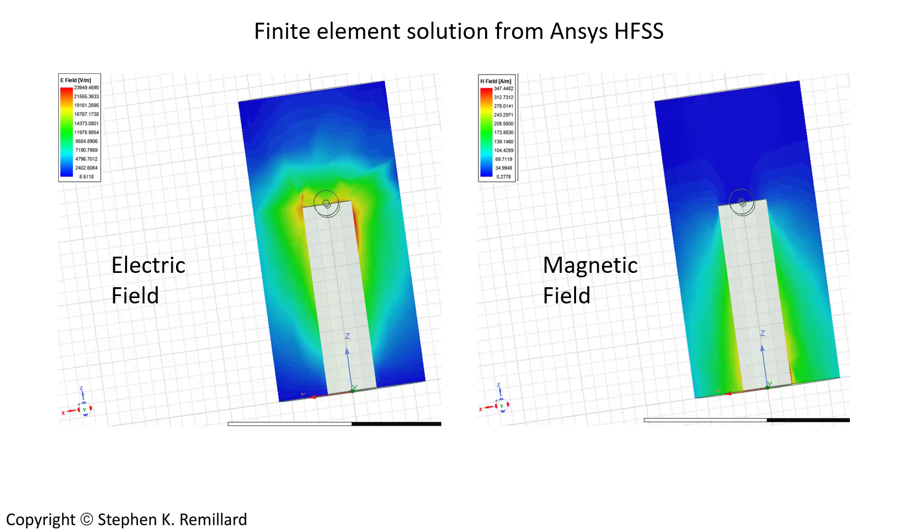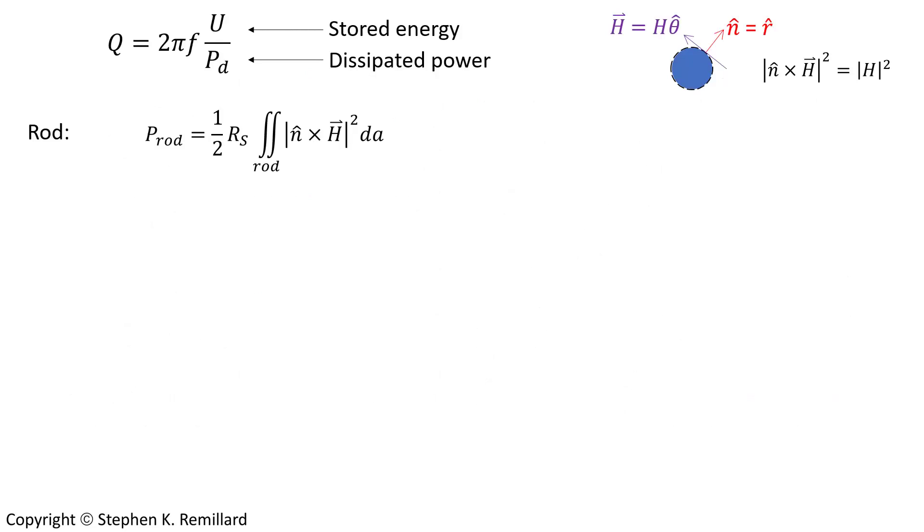The Q factor for a resonator is stored energy per cycle divided by the power dissipated, and we're going to go ahead and calculate that. It's a set of integrals. Let's start with the dissipated power, the denominator. Looking at the rod.